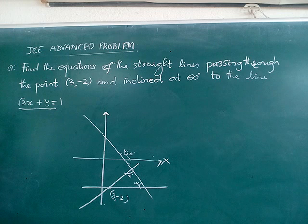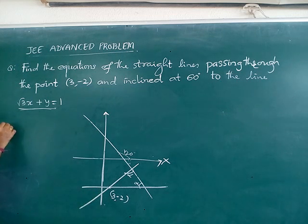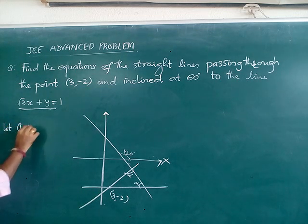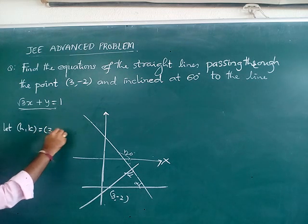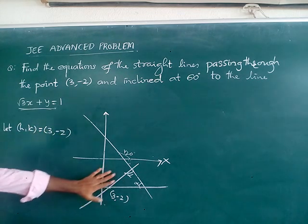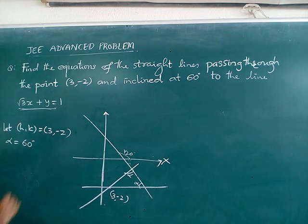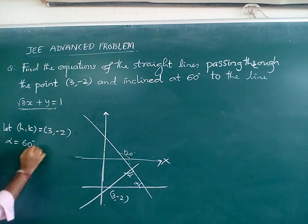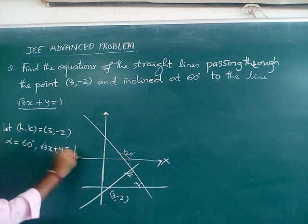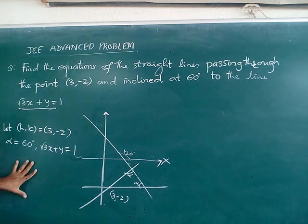Very simple. Here we have a formula. First we need to write the details what they have given. The point what they have given for us is, let us take h comma k equal to (3, -2). And the next one is angle between them, I will take it as alpha which is 60 degrees. And the next given straight line is root 3x plus y equal to 1.